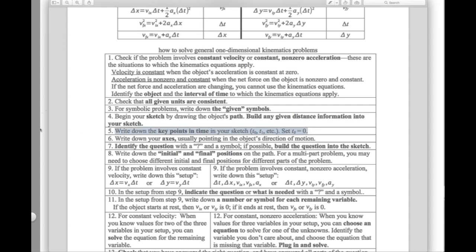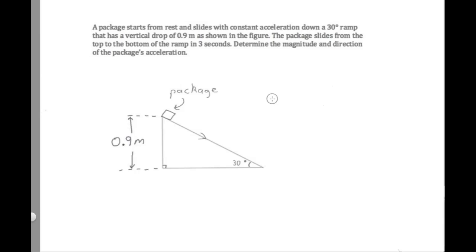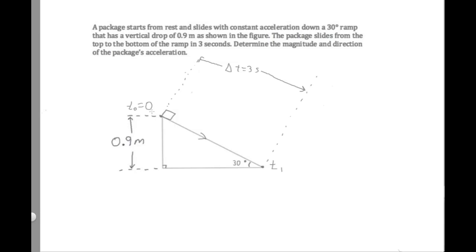We should write down the key points in time in our sketch. The beginning of the path is a key point in time, so I'll call this time 0 and set it equal to 0. The only other point we care about is at the end of the path — the bottom of the ramp — which I'll call T1. We know it took 3 seconds for the package to go from top to bottom, so at the bottom the time equals 3 seconds.